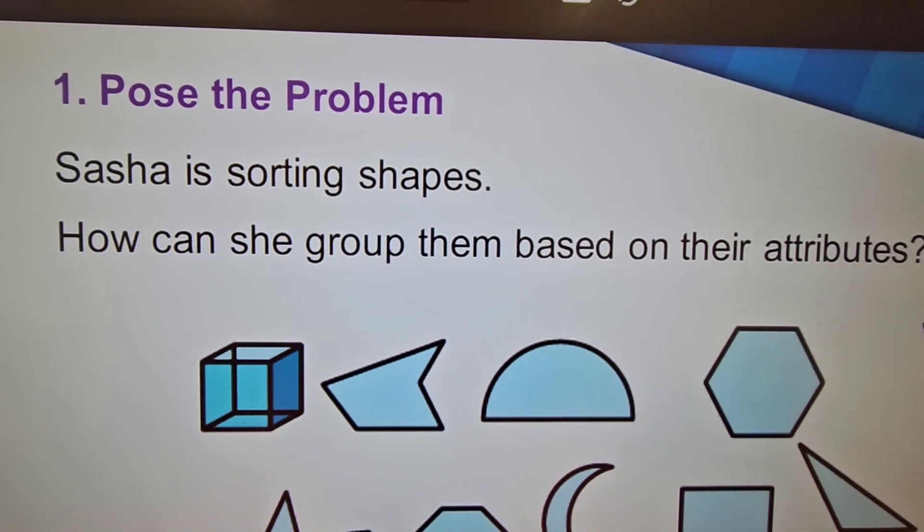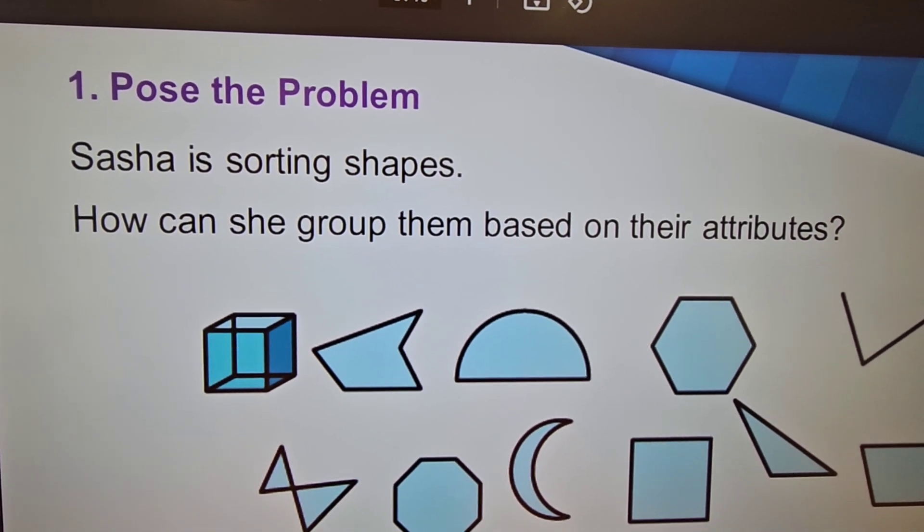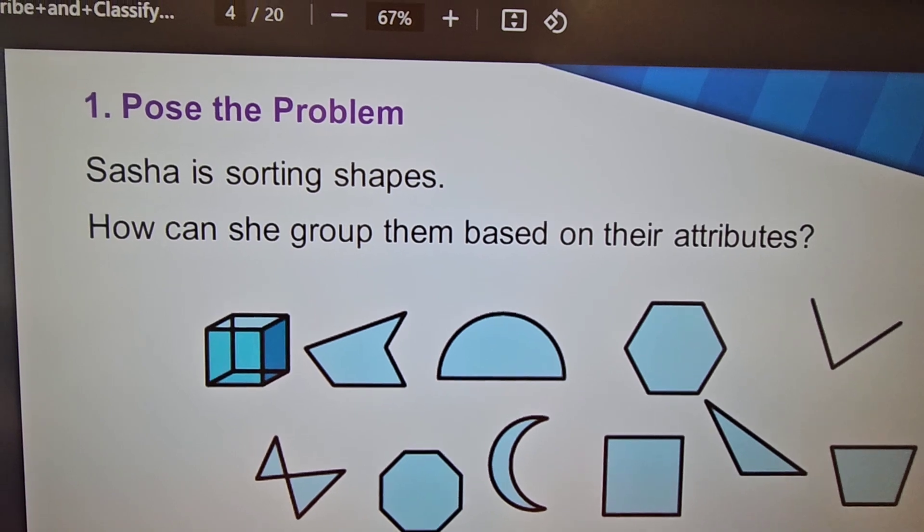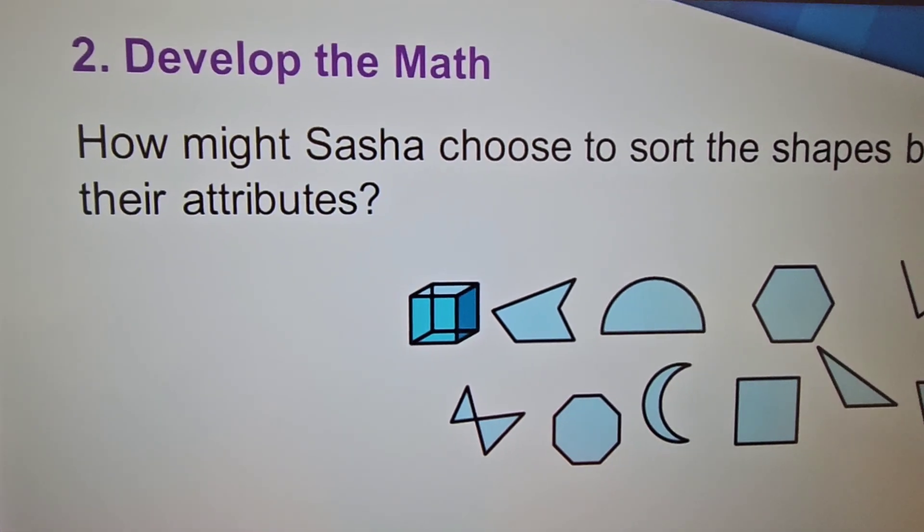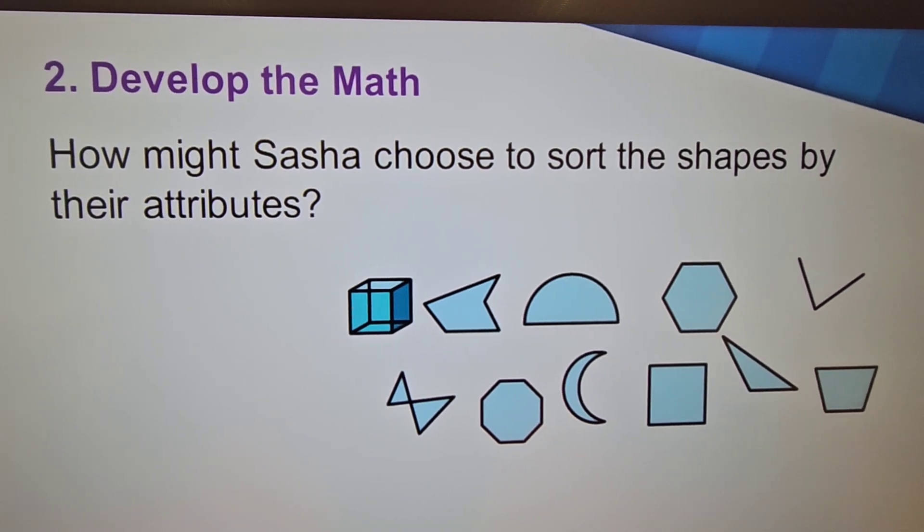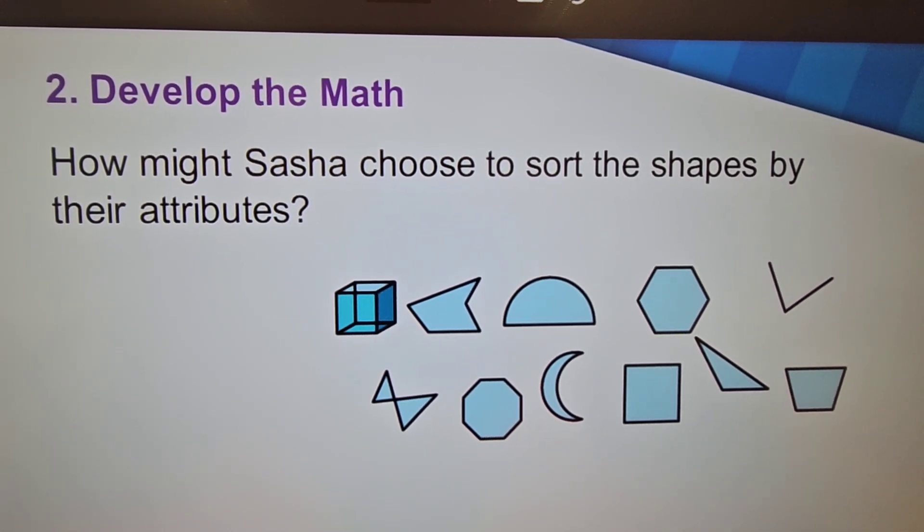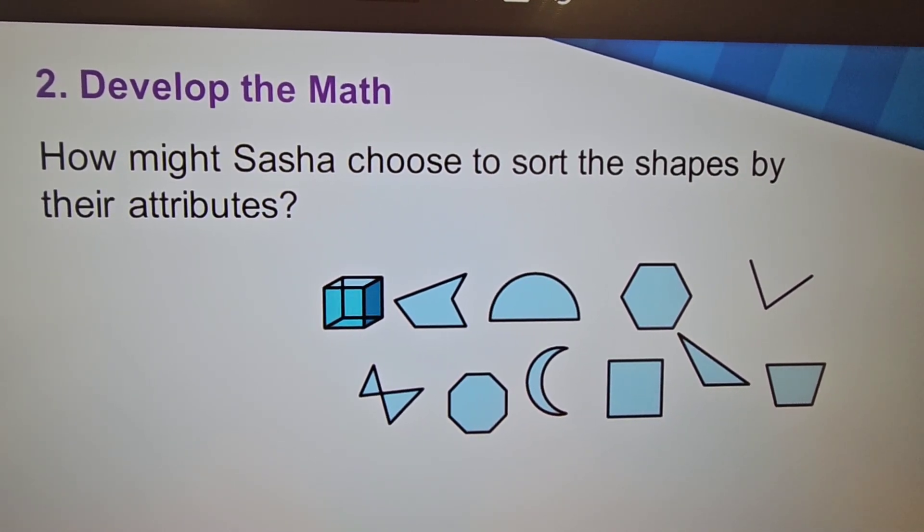Then, of course, I post them a problem. Sasha is sorting shapes. How can she group them based on their attributes? So they're going to be looking at the shapes and tell me what are the similarities, what are the differences, how could they separate them, how could they group them?